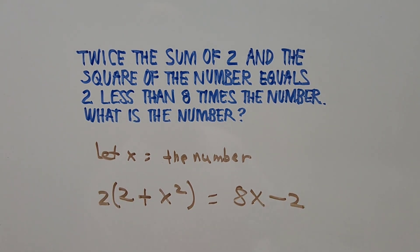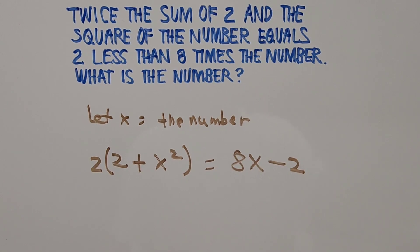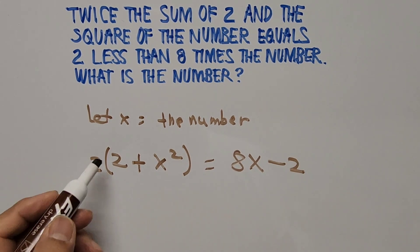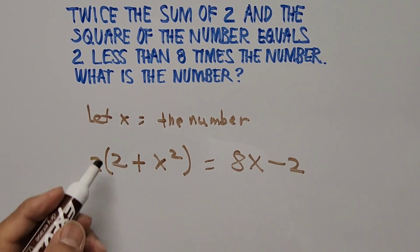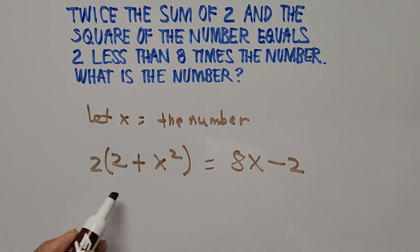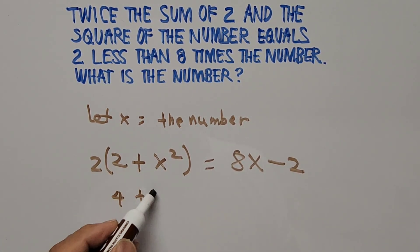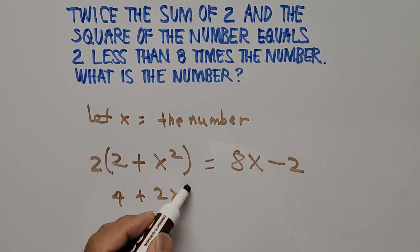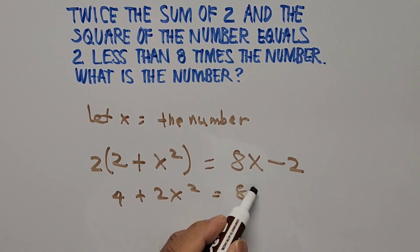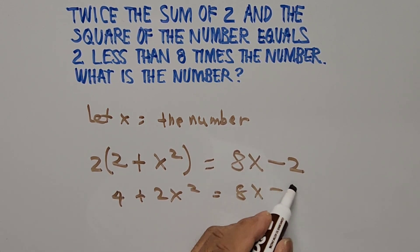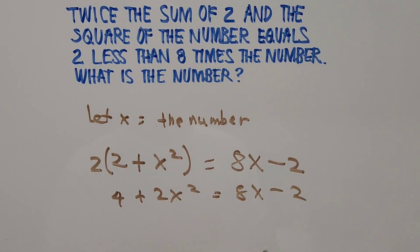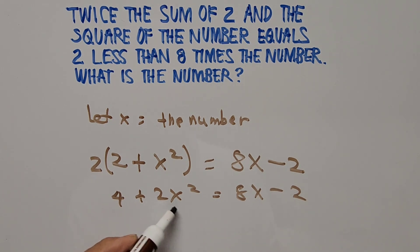Now let's simplify. Distribute the 2 on the left side: 2 times 2 is 4, plus 2X squared. That equals 8X minus 2.